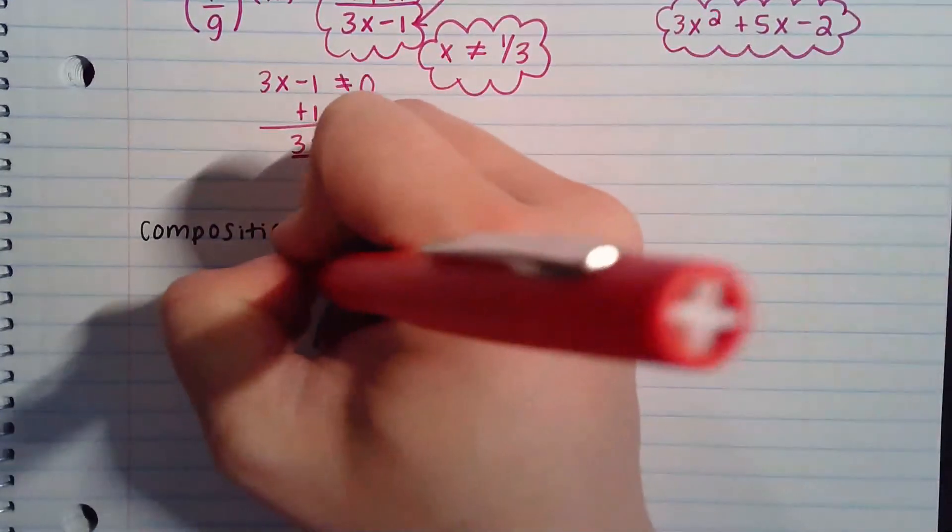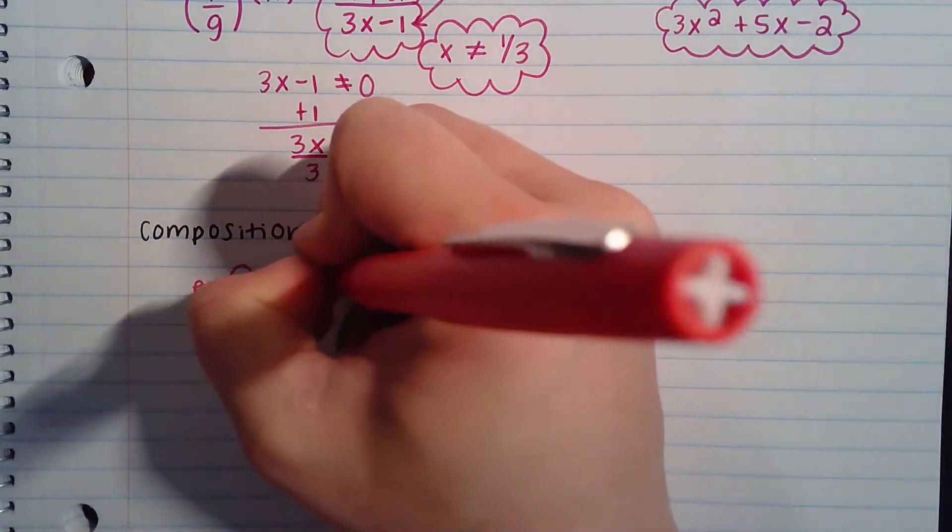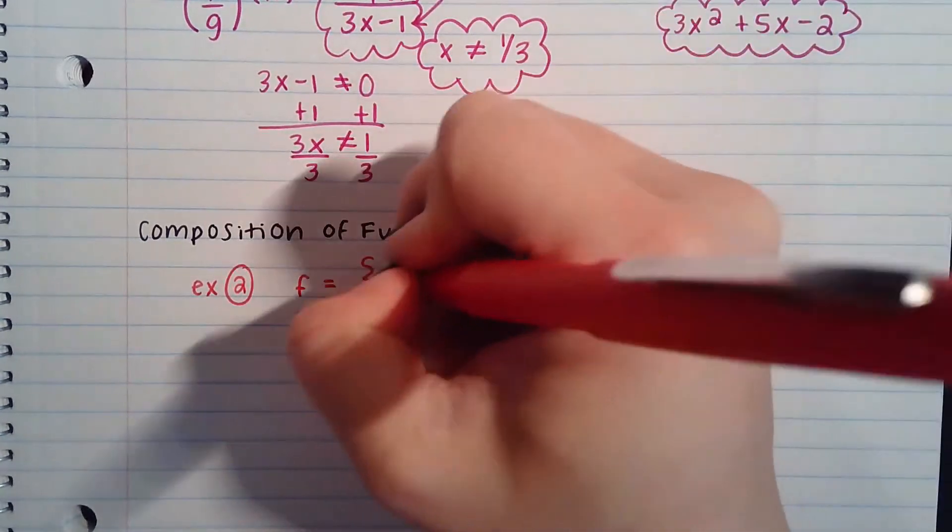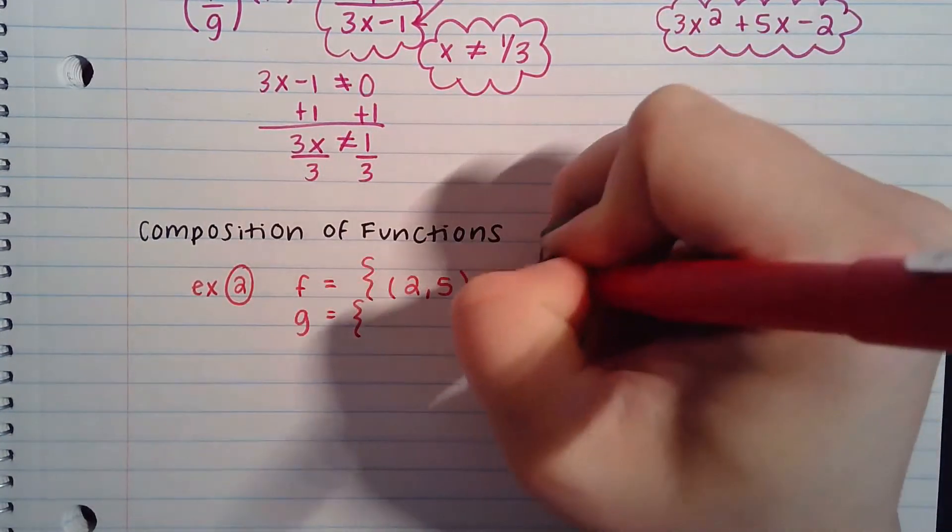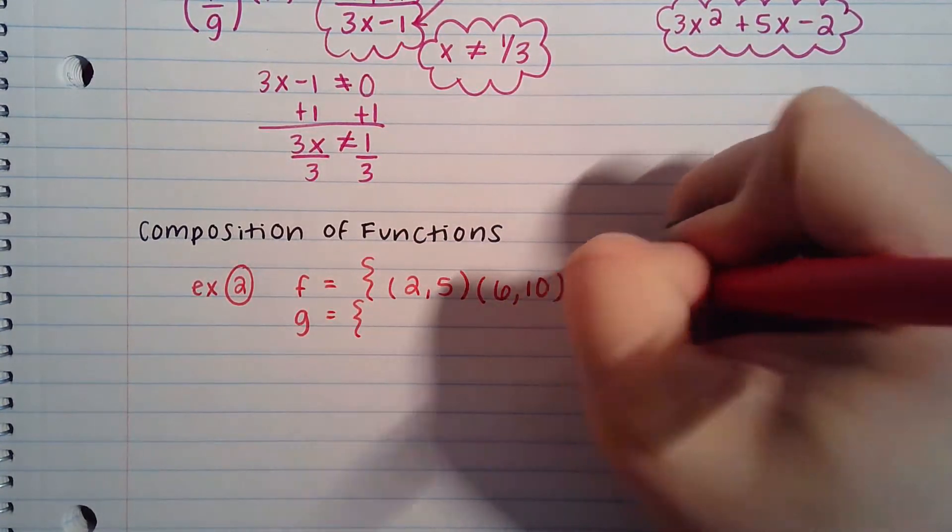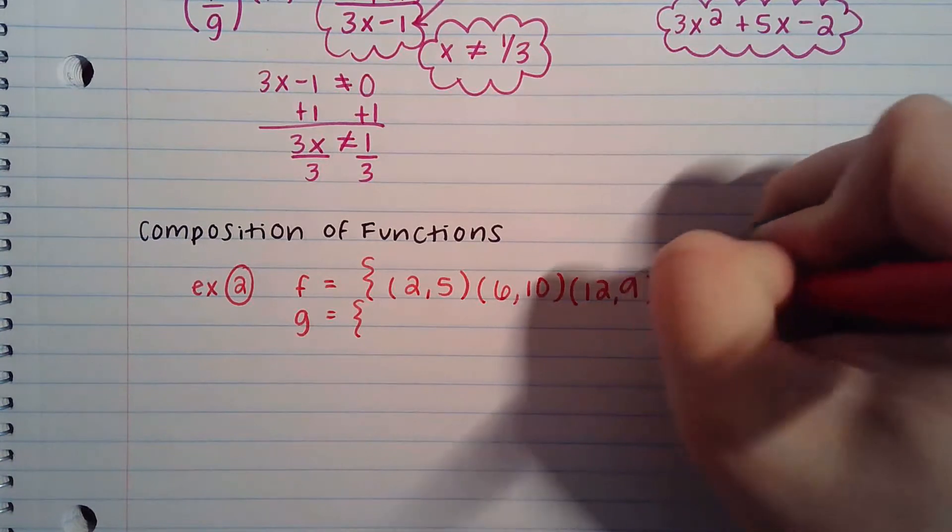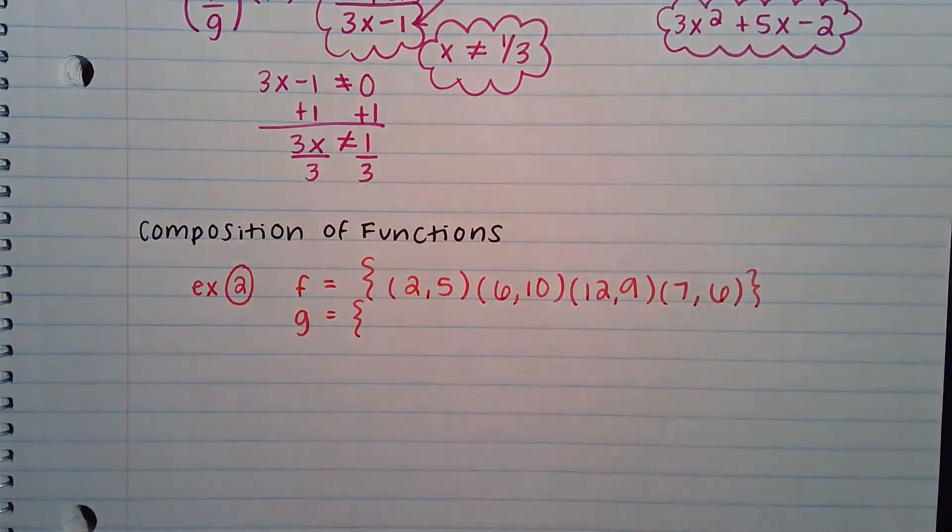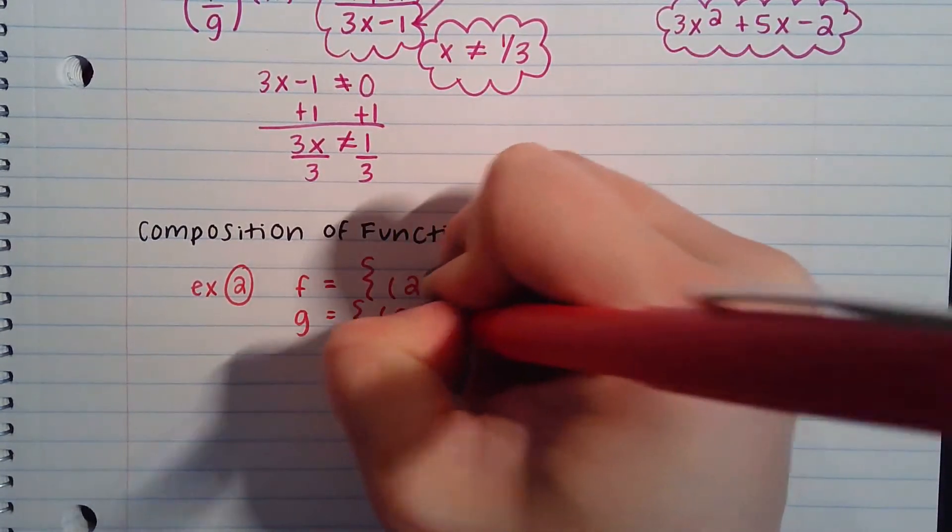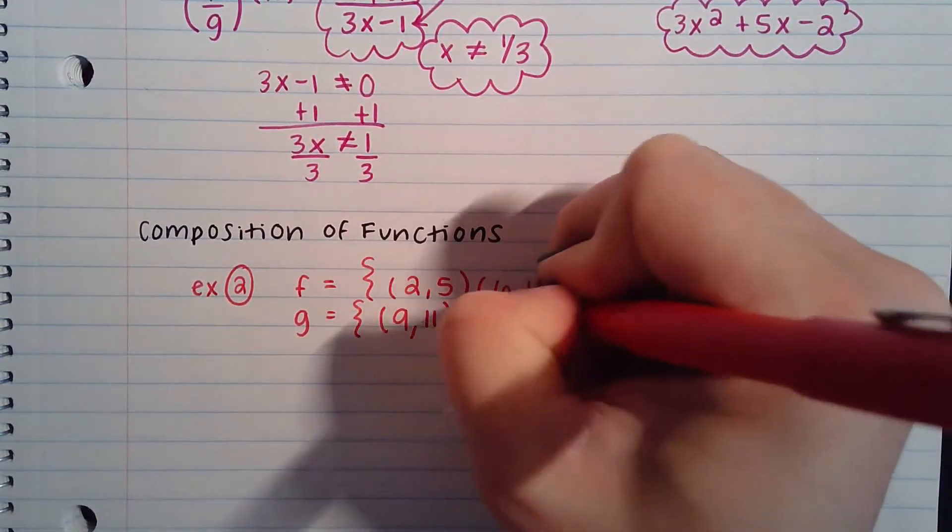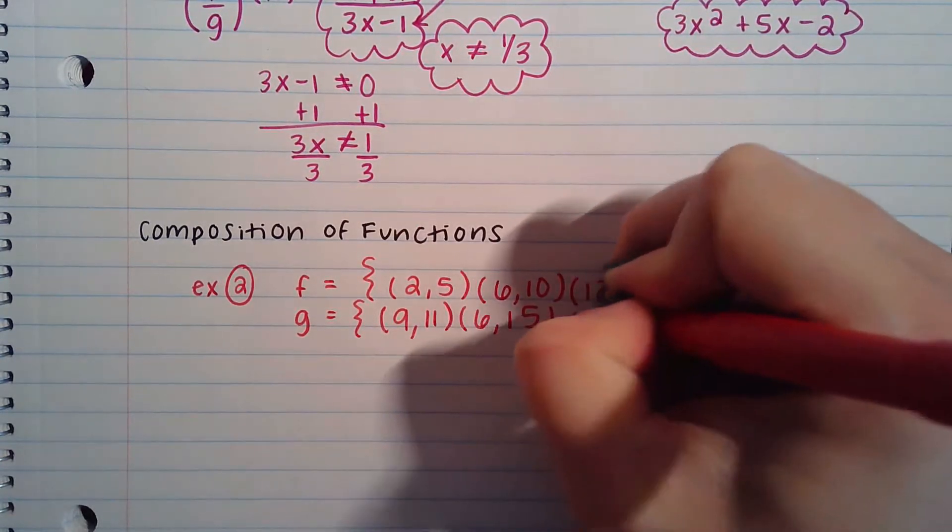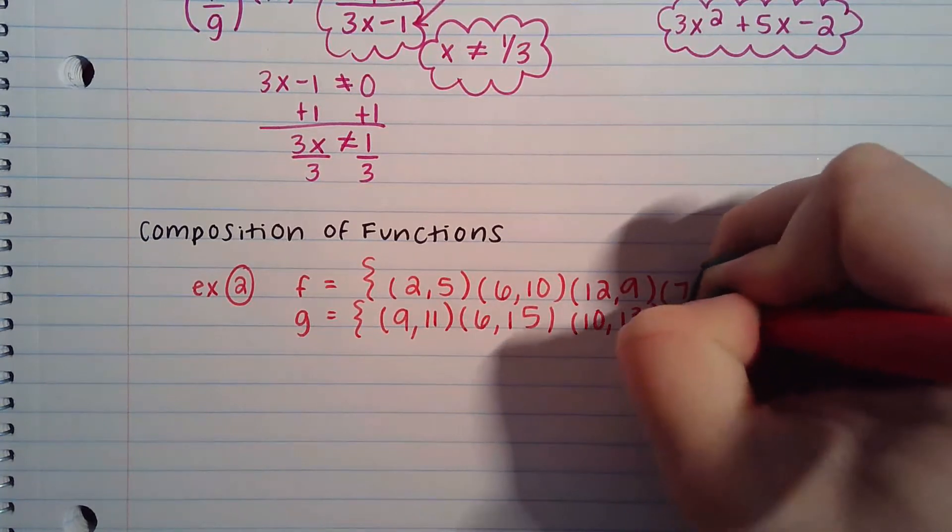So let's start first with the coordinate points example. Okay, so let's say we are given a set of coordinate points for f and g. Let's say f has the points (2,5), (6,10), (12,9), and (7,6). And for the g points, we will say that it has points at (9,11), (6,15), (10,13), and (5,8).